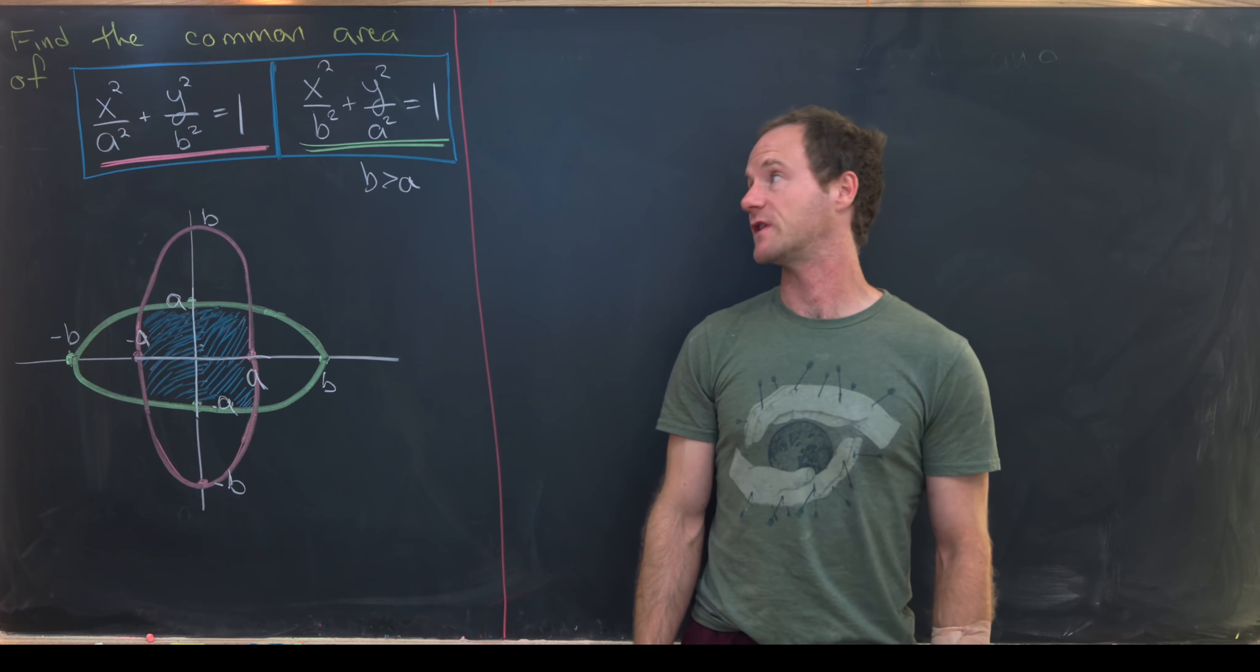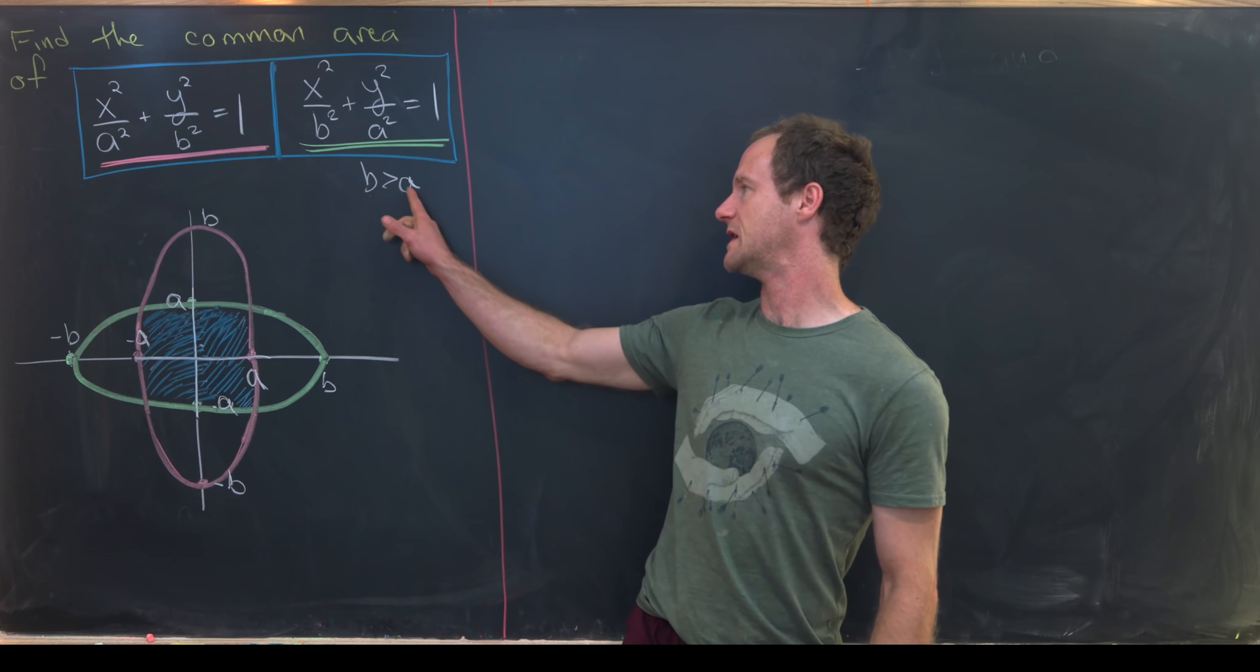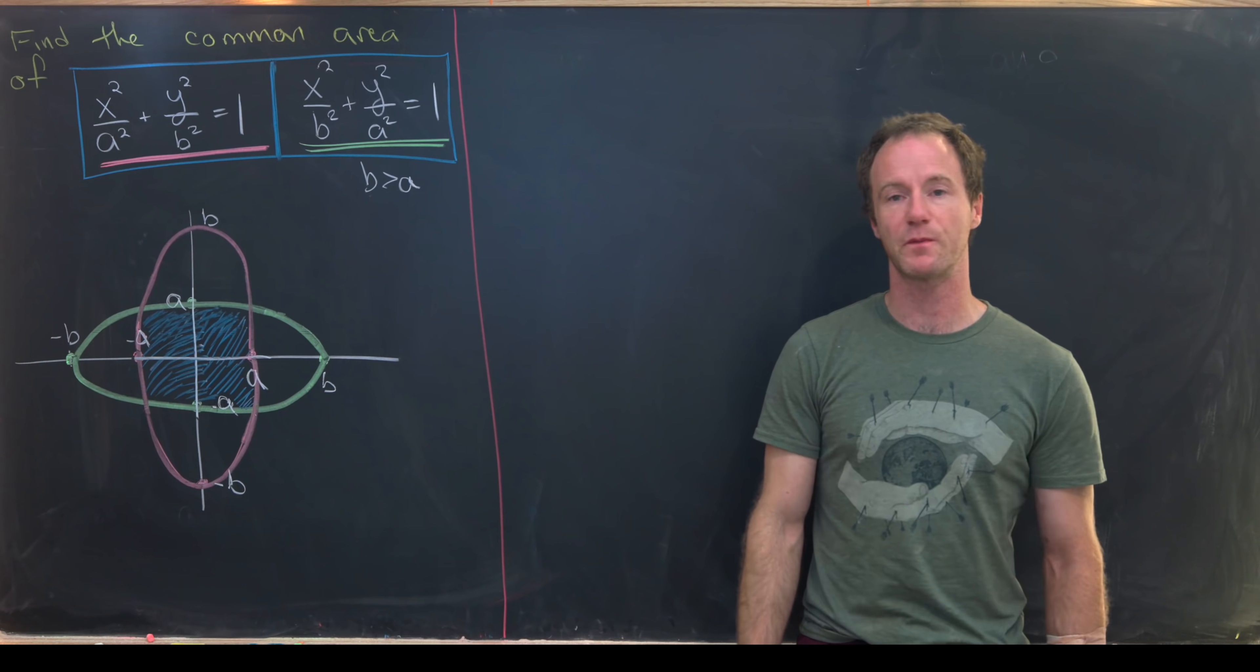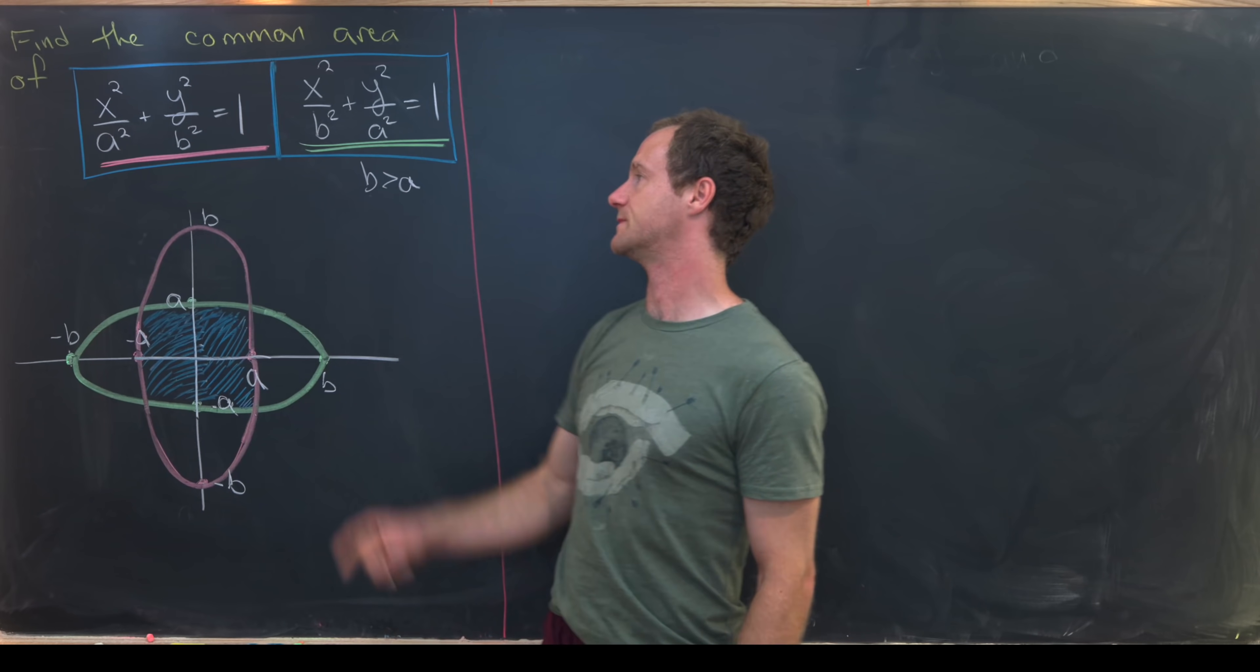Here I've got a nice problem involving ellipses. Let's first assume that b is bigger than a and they're both positive real numbers. And then we've got these two ellipses.